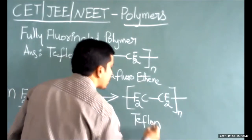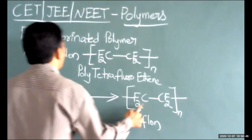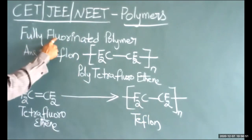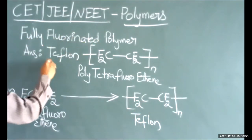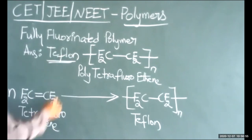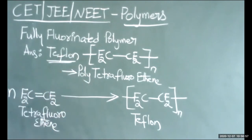Teflon contains only fluorine atoms, so we can say the fully fluorinated polymer is teflon, also known as polytetrafluoroethene. That is the answer — option number two.